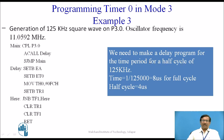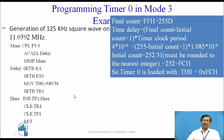To find the TH0 reload value: The time period for 125 kHz is 1/125×10³ = 8 µs for a full cycle, so the half-cycle delay needed is 4 µs. Using the formula with final count = 255 and timer clock period = 1.085 µs for 11.0592 MHz, and substituting 4 µs as the required delay, we get initial count = 252.31, rounded to 252, which is FCH. Therefore, TH0 is loaded with FCH.